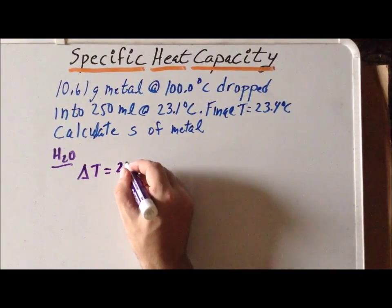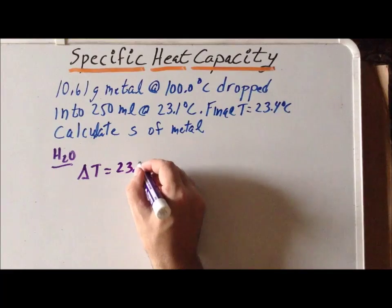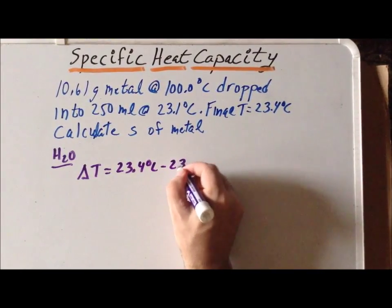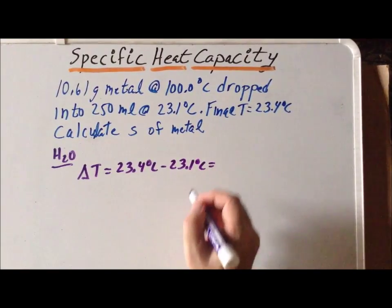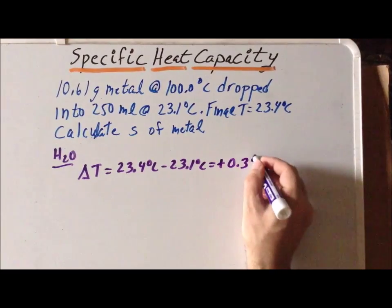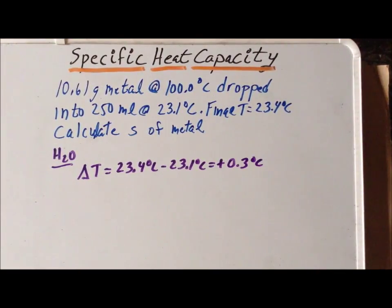So we have 23.4 degrees centigrade minus 23.1 degrees centigrade. So we have an increase, a positive increase of 0.3 degrees centigrade for the water.